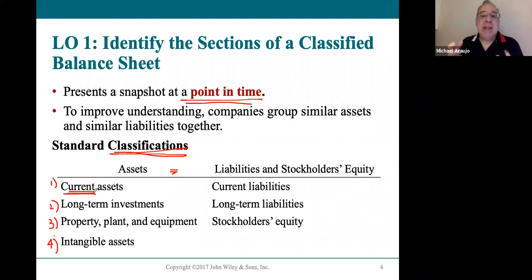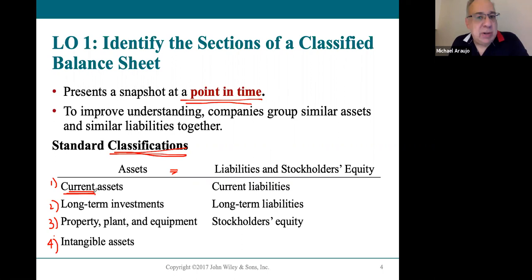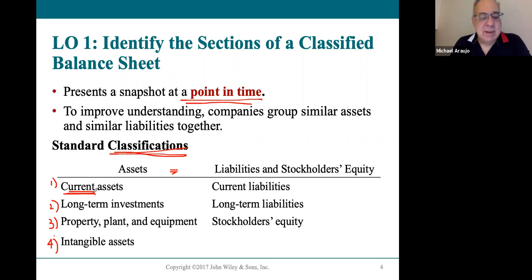You've already seen some current asset accounts — like cash, accounts receivable, supplies, and prepaid insurance. Cash is already cash. Accounts receivable will be turned into cash within 30 days because you're waiting to receive money on work you've already done. Supplies and prepaid insurance, once used, are expensed. They're current assets because we use them quickly — less than a year.